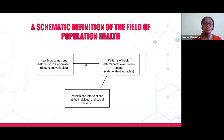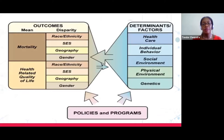This more detailed diagram shows how policies and programs at the bottom influence the determinants of health on the right and the health outcomes on the left. Looking at those health outcomes, we have what we call disparity — meaning health outcomes can differ due to certain factors such as race, ethnicity, socioeconomic status, geography, and gender.